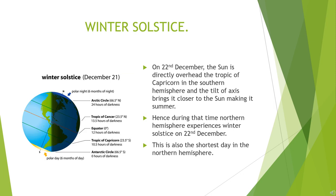Let us understand what is winter solstice. On 22nd December, the sun is directly over the Tropic of Capricorn in the Southern Hemisphere, and the tilt of the axis brings the Southern Hemisphere closer to the sun, making it summer there. When the Southern Hemisphere is closer to the sun, obviously the Northern Hemisphere is away from the sun. Thus the Northern Hemisphere experiences winter solstice on this day. This is also the shortest day in the Northern Hemisphere. Therefore, the Northern Hemisphere experiences summer solstice on 21st June and winter solstice on 22nd December.